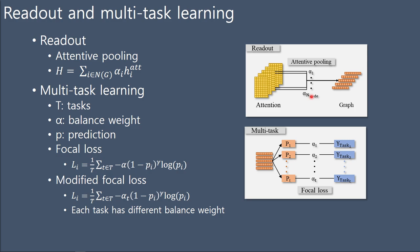We used attentive pooling and focal loss for multi-task learning. Due to the property of multi-task, each task has a different degree of imbalance. So we modified it so that different alpha can be used for each task.